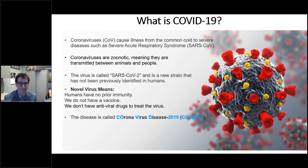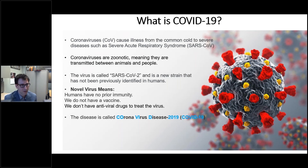We don't have a vaccine available for it, even though people are working towards one right now. And we don't have antiviral drugs to treat the virus in people who are infected, though people are currently working on that. The virus causes the disease called Coronavirus Disease 2019 — 2019 because that's when it was identified — and we've shortened that to COVID-19.